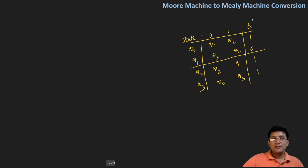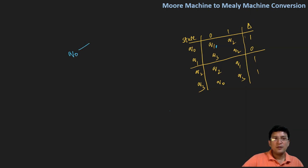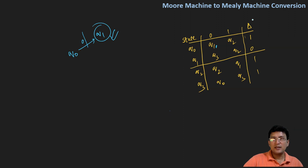If we are moving from q0 to q1 by taking the symbol zero, then whatever output is associated with the q1 state will be the output associated with this transition. For example, moving from q0 with zero symbol to q1 state — the output associated with q1 will be the output for this transition. So we apply the output associated with q1, which is zero, to this transition.